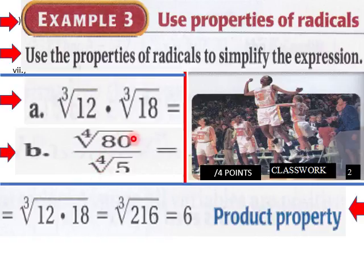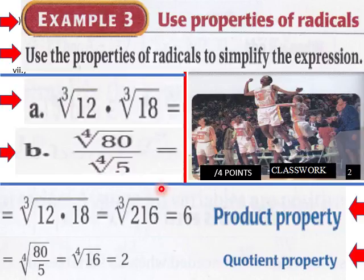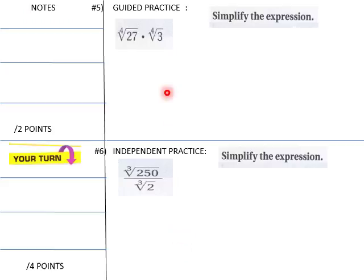And then we have the fourth root of 80 over the fourth root of 5. That would be the same thing as the fourth root of 80 over 5, which should be the fourth root of 16, which equals 2. And that's the quotient property of Radicals.